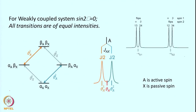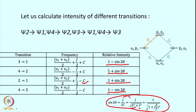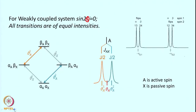For a weak coupling system, sin2θ = 0, meaning all four transitions are of equal intensity — we get 1:1:1:1. For these four transitions (1→3, 2→4, 1→2, 3→4), each has equal intensity and the center of the pattern corresponds to the chemical shift of spin 1. Here, A is the active spin (flipping) and X is the passive spin (not flipping), with equal intensity arising for the weak coupling case.